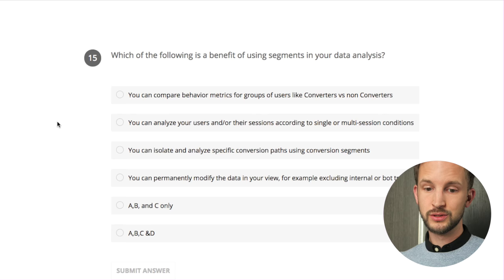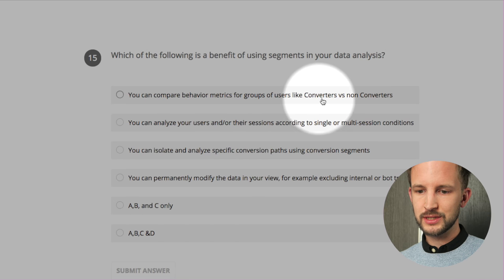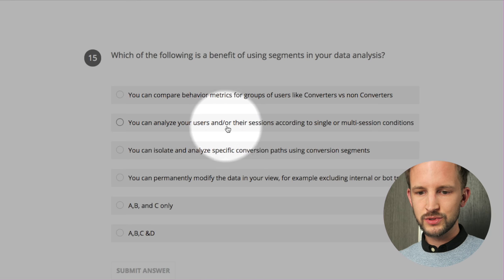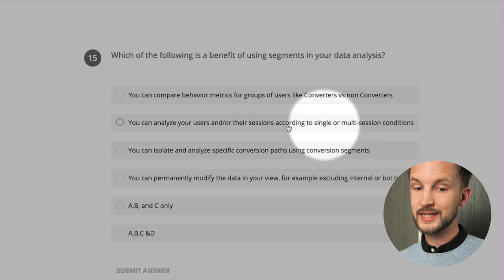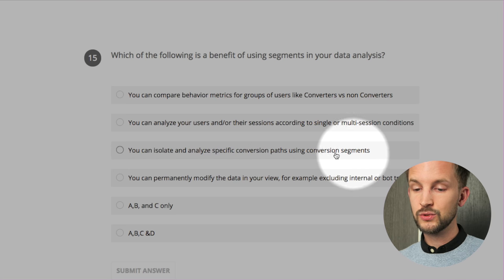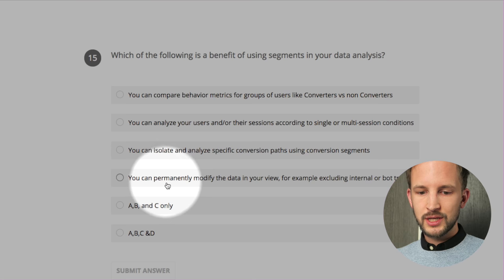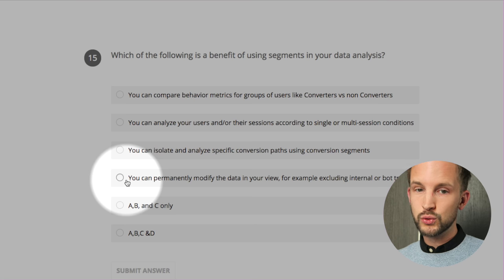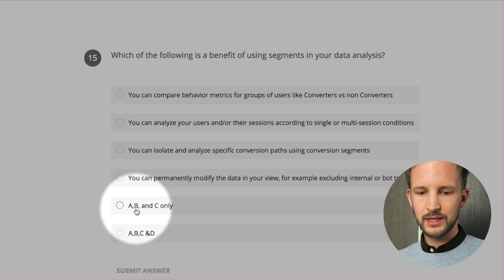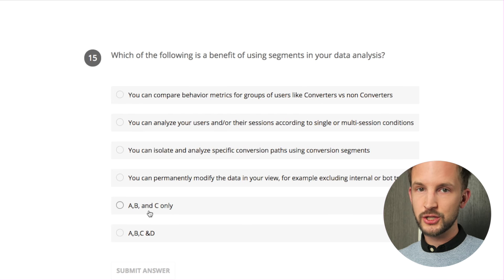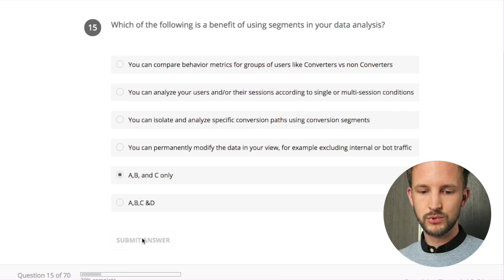Which of the following is a benefit of using segments in your data analysis? I always use segments. You can compare behavior metrics for groups of users like converters versus non-converters - correct. You can analyze users and their sessions according to single or multi-session conditions - correct. You can isolate and analyze specific conversion paths using conversion segments - you can do that in multi-channel funnel reports. You can permanently modify the data in your view - no, you cannot. So it's A, B and C - boom!